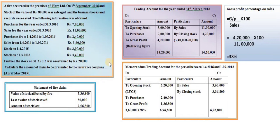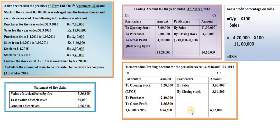Now let us prepare the memorandum trading account. Opening stock: 3 lakh 20,000 (last year's closing stock, adjusted for overvaluation, becomes this year's opening stock). Purchases up to the date of fire: 2 lakh 40,000. Gross profit on sales: 38 percent of 3 lakh 60,000 equals 1 lakh 36,800. Total debit items: 6 lakh 96,800.